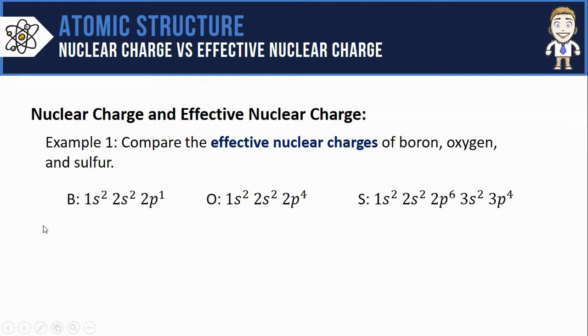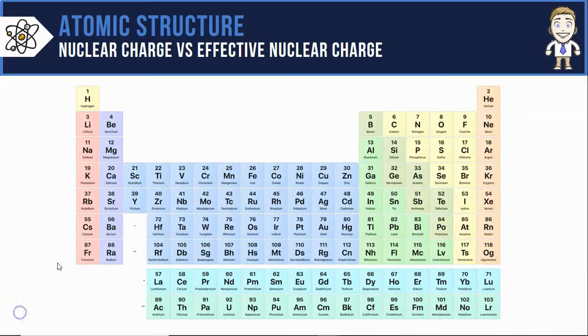This is going to very clearly let me find the inner shielding core electrons. I also need to use a periodic table to look up the nuclear charges of each. Here's boron with 5 protons, so plus 5, oxygen plus 8, sulfur plus 16.